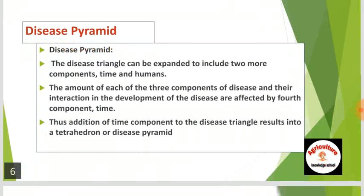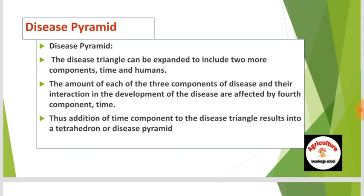Disease pyramid. The disease triangle can be expanded to include two more components: time and humans. The amount of each of the three components of disease and their interaction in the development of the disease are affected by a fourth component — time. Thus, the addition of the time component to the disease triangle results in a tetrahedron or disease pyramid.